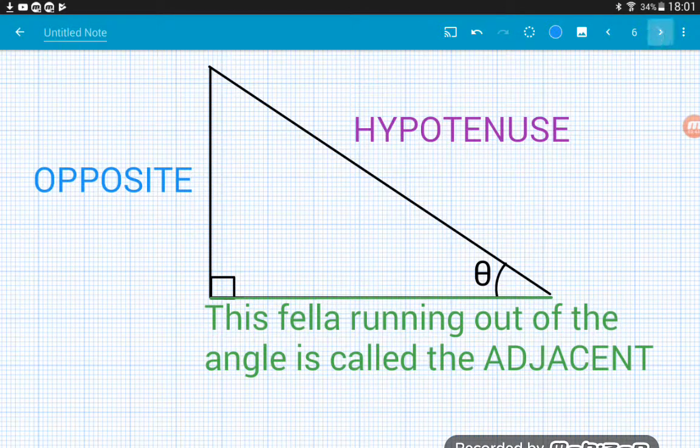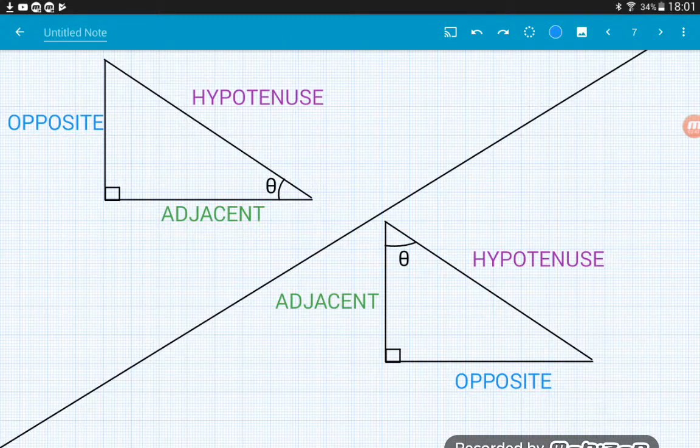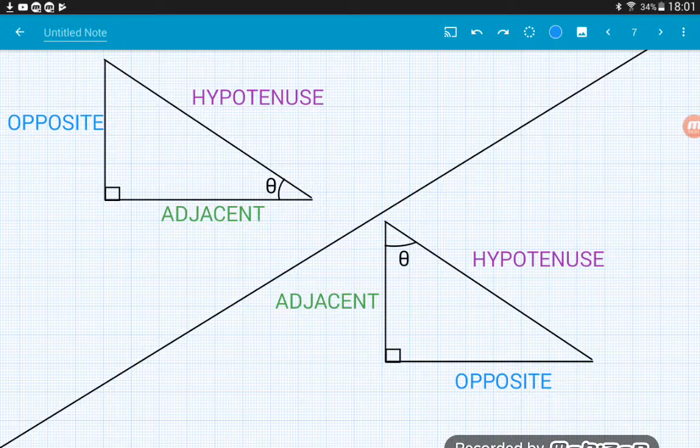Now then, as I said, those two sides do change depending on which angle we're playing with. So this triangle in the top left is the one that we just worked through, where we were playing with the bottom right angle theta. So we've got the opposite up to the left and the adjacent running along the bottom.